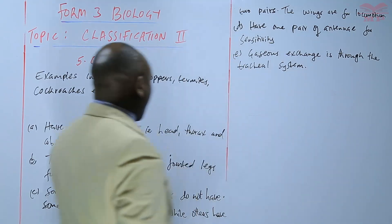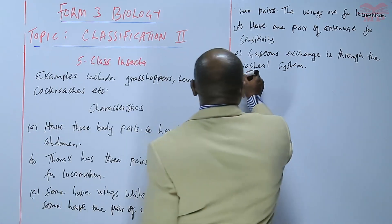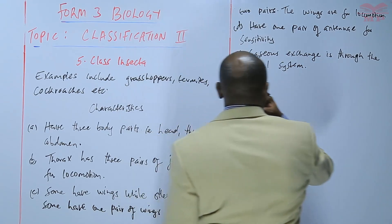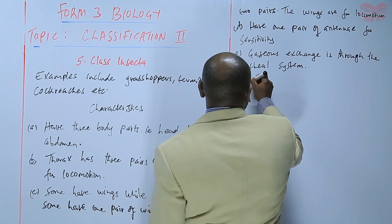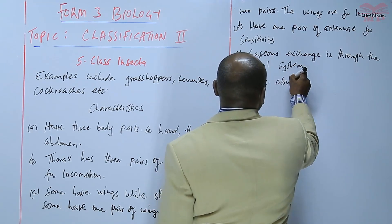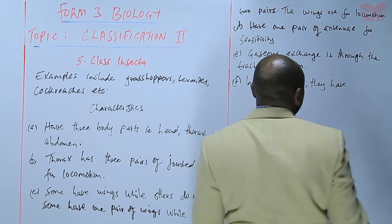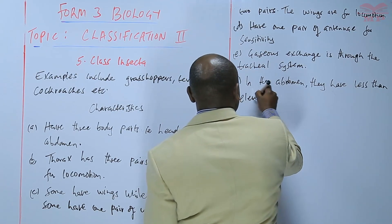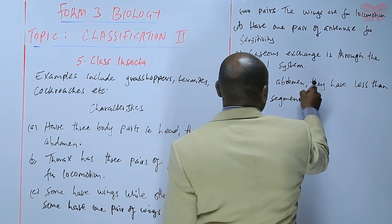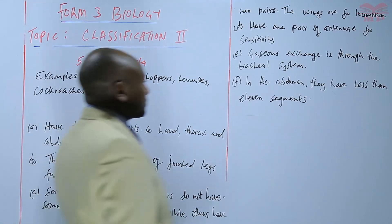The insects have one pair of antennae for sensitivity. Gaseous exchange is through the tracheal system. Gaseous exchange is through the tracheal system as learnt earlier in the topic of gaseous exchange that was covered in Form Two. Then in the abdomen...